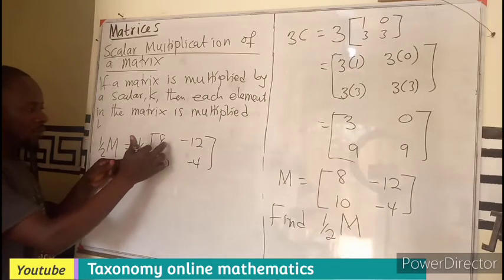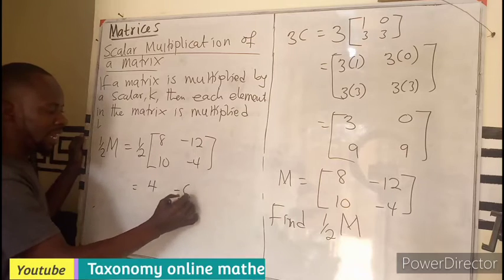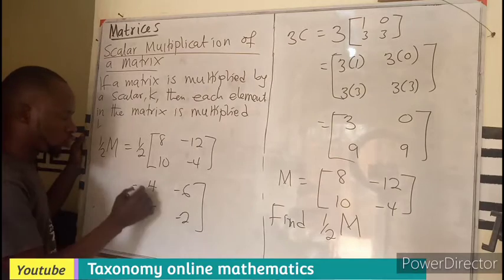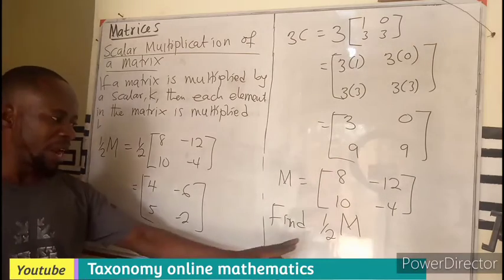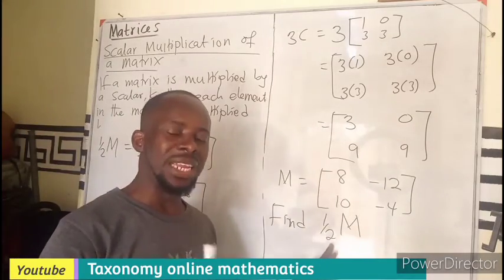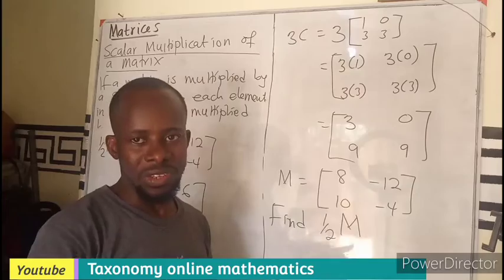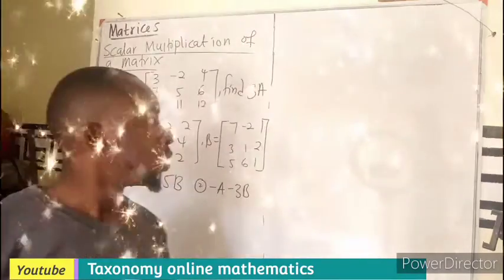So half of it in this case will be [4, 5; -6, -2]. That is a scalar multiplication. So whatever number that is multiplying the matrix will have to multiply each of the entries, not only some but each of them. All right, let's try this one.